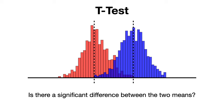A t-test is a statistical test used to determine if there is a significant difference between the means of two groups. It is commonly used when dealing with small sample sizes and the data follows a normal distribution or approximately normal.